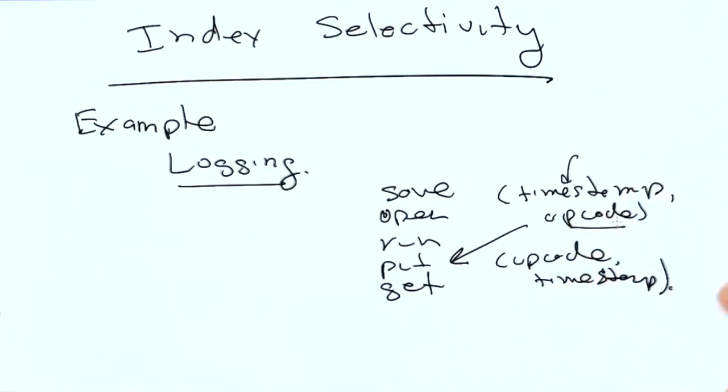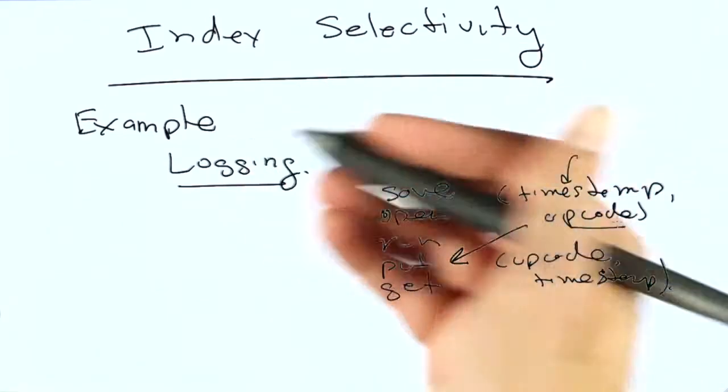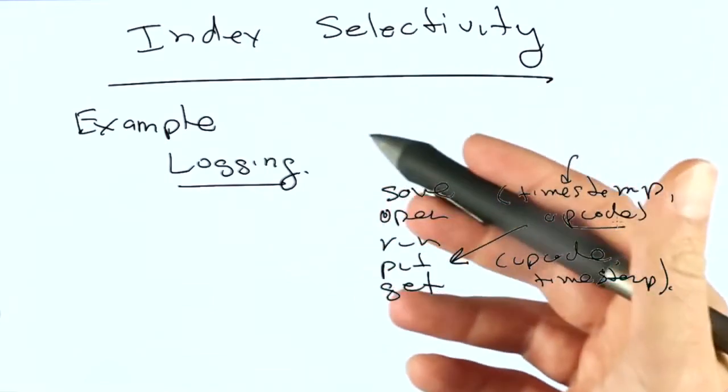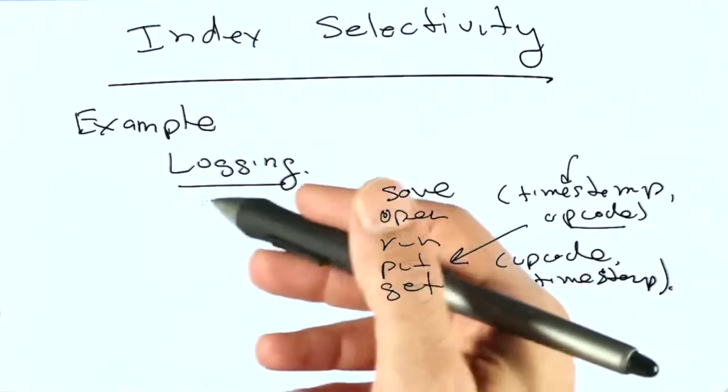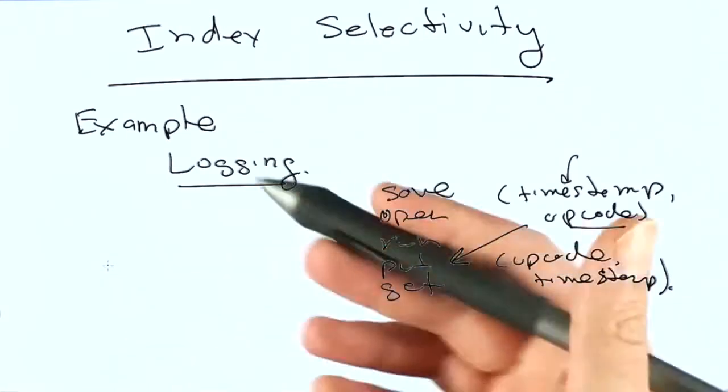This idea of trying to choose an index with selectivity is universally true in databases. It's true in relational databases, and it's true in MongoDB. So just keep that in mind when you're creating your indexes that you'd like to have them be very selective if you can.